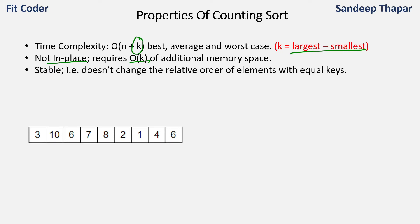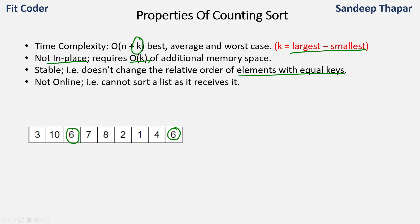Counting sort is also a stable algorithm — it doesn't change the relative order of elements with equal keys. In the example where we had two values of six that were the same, the relative order was maintained. Additionally, counting sort is not an online algorithm because it needs to know beforehand what the maximum element is. It creates the auxiliary array based on that, so it cannot sort a list as it receives it.